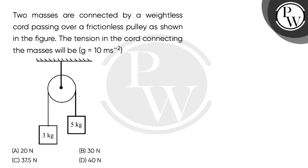So let's read the question. Two masses are connected by a weightless cord passing over a frictionless pulley as shown in the figure. The tension in the cord connecting the masses will be. So children, we have given two masses which are tied and a frictionless pulley.